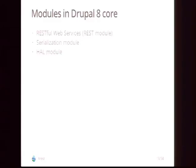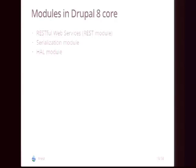In Drupal 8, we have basically three modules: the REST Web Services module, the Serialization module, and the HAL module. The REST module handles requests and responses. The Serialization module transforms objects like nodes from the database into a string to ship with the HTTP response. The HAL module provides the Hypertext Application Language format — our prime, canonical format for Drupal 8. It has hypermedia controls, is based on JSON, and is our settled canonical format.